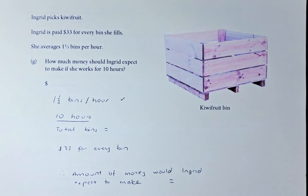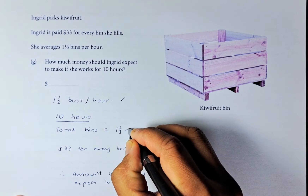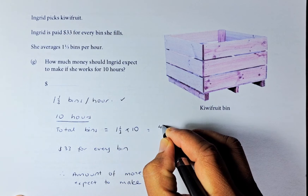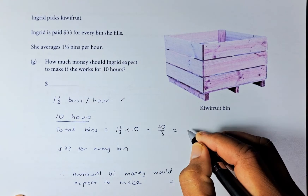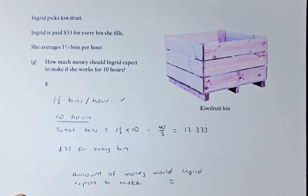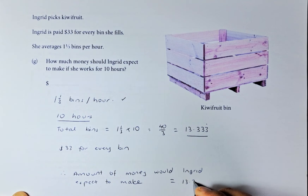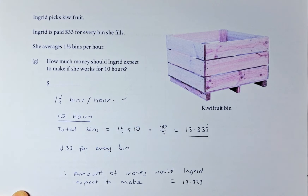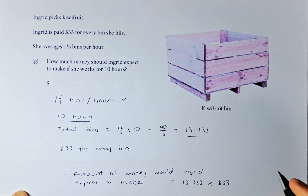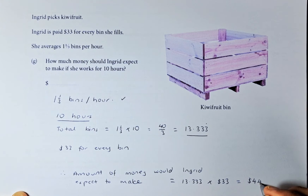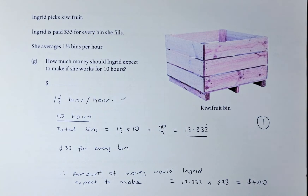She does one and one third bins per hour, so if she works 10 hours the total bins filled will be one and one third multiplied by 10, which gives us 40 over 3, or as a decimal 13.333 recurring. She is paid $33 per bin, so the amount Ingrid would expect to make is 13.333 recurring multiplied by 33, which gives an answer of $440. If you get that right, that is Outcome number 1.